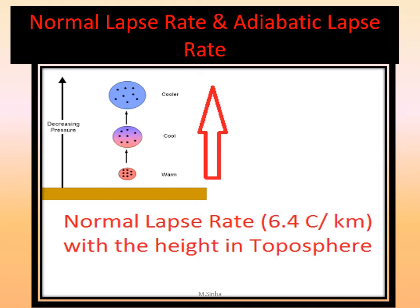Now, the normal lapse rate is not associated with ascending or descending air currents — not associated with the upward or downward movement of air. It is normally confined within the troposphere, extending up to the tropopause. On average, the height of the tropopause is 18 km from Earth's surface. With increasing height, temperature gradually falls, and this rate is known as the normal lapse rate — on average 6.4 degrees centigrade per kilometer. There is no air parcel movement, no ascending or descending current; there is simply a negative trend of temperature with increasing height.